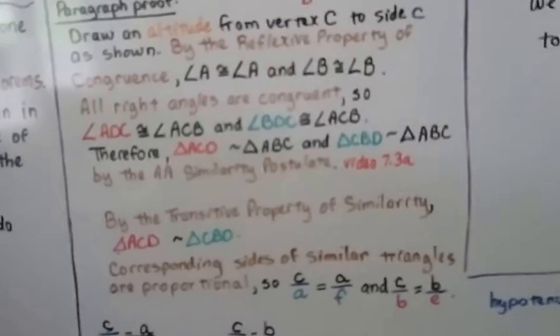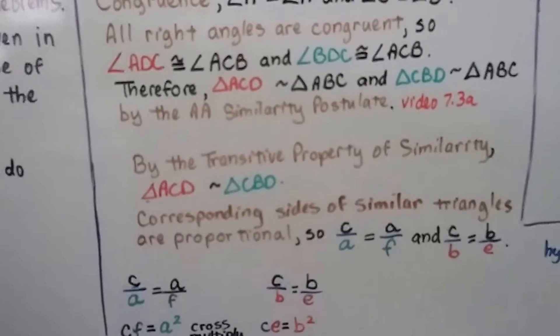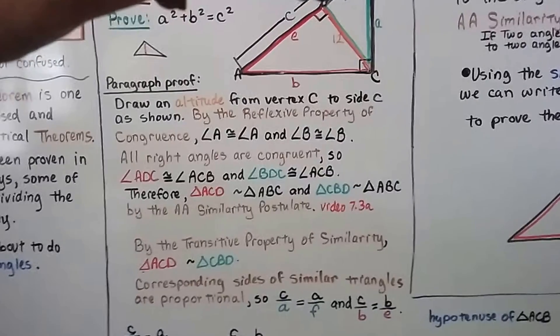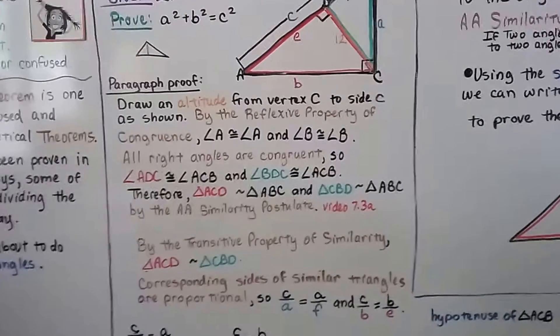So, by the transitive property of similarity, triangle ACD, the red one, is similar to triangle CBD, the green one.